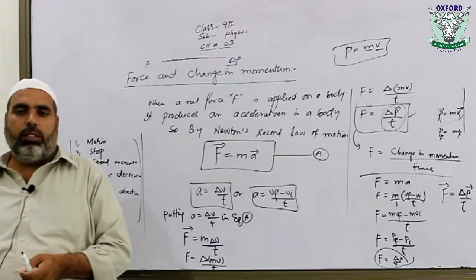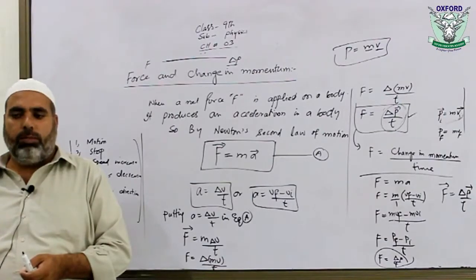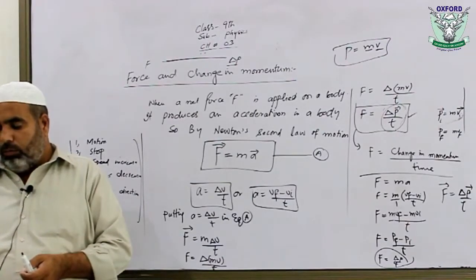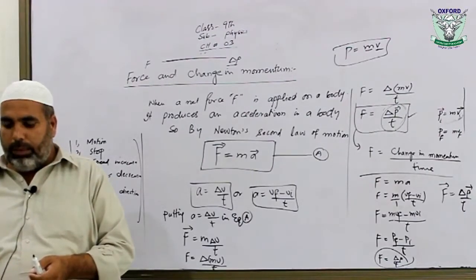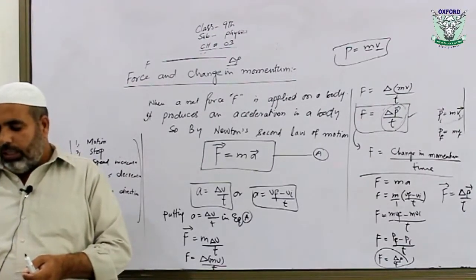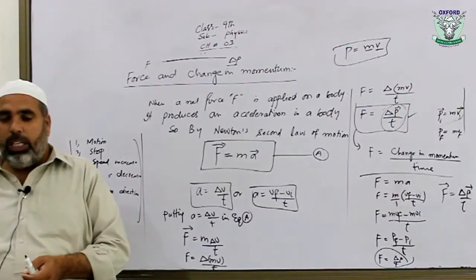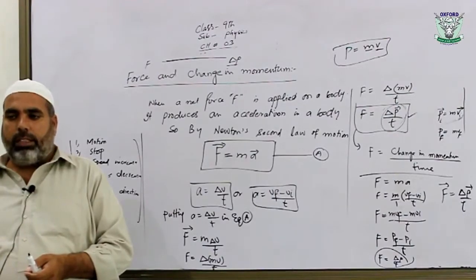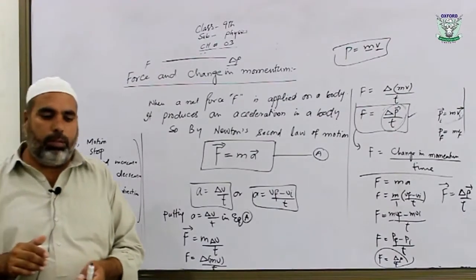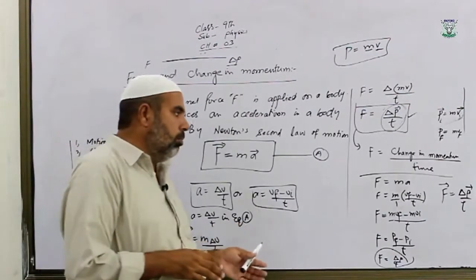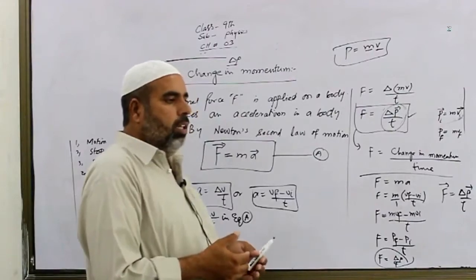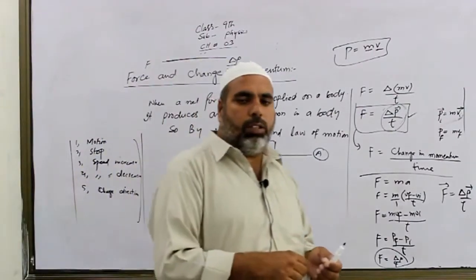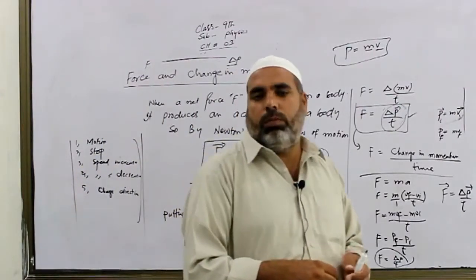Types of systems: isolated system, open system, and closed system. This will be part of the assignment. Thank you.